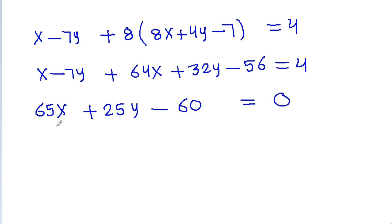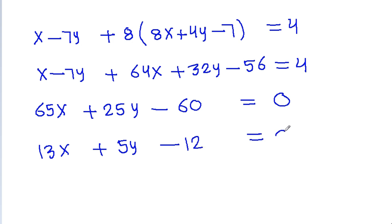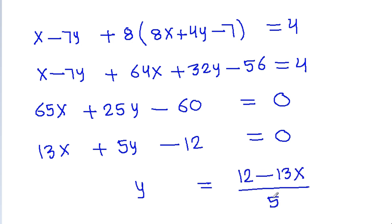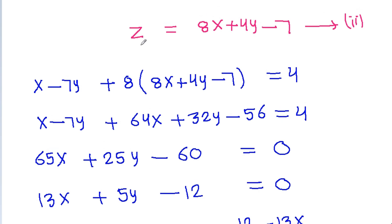Dividing by 5, we get 13x + 5y - 12 = 0, or y = (12 - 13x) / 5. So we have y expressed in terms of x. We also have g = 8x + 4y - 7.